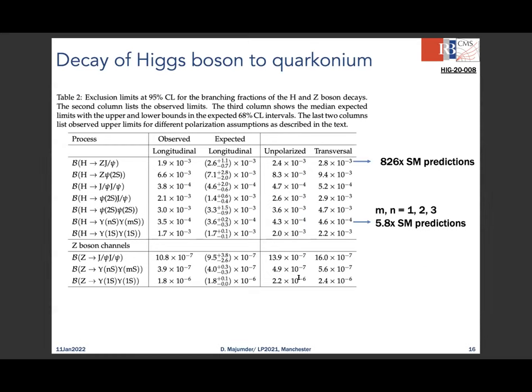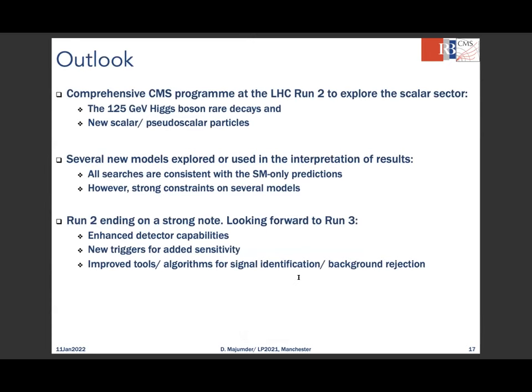In summary, CMS Run 2 results cover rare decays of the 125 GeV Higgs boson as well as searches for new scalars and pseudoscalars in several BSM models. All results are consistent with Standard Model predictions while providing substantial constraints on new physics models. For Run 3, improved detectors, triggers, and object detection algorithms are expected to yield many exciting physics results.